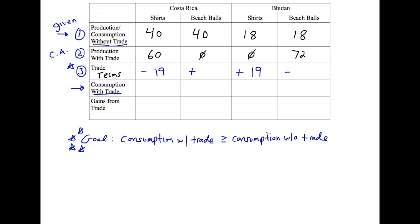If Costa Rica was producing 60 shirts and gave away 19, they can now consume 41, which is greater than their consumption without trade — they gained one shirt. Bhutan used to have 18 shirts; they didn't produce any, but they gained 19 from Costa Rica, so they can consume 19 — one greater than before. Both countries show consumption with trade greater than consumption without trade.